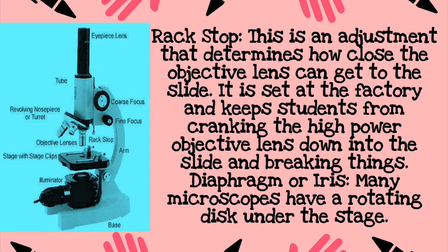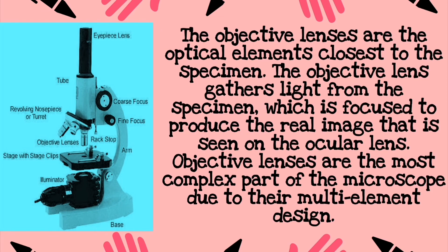The diaphragm or iris — many microscopes have a rotating disc under the stage. Next, the objective lenses are the optical elements closest to the specimen. The objective lens gathers light from the specimen, which is focused to produce the real image seen through the ocular lens. Objective lenses are the most complex part of the microscope due to their multi-element design.